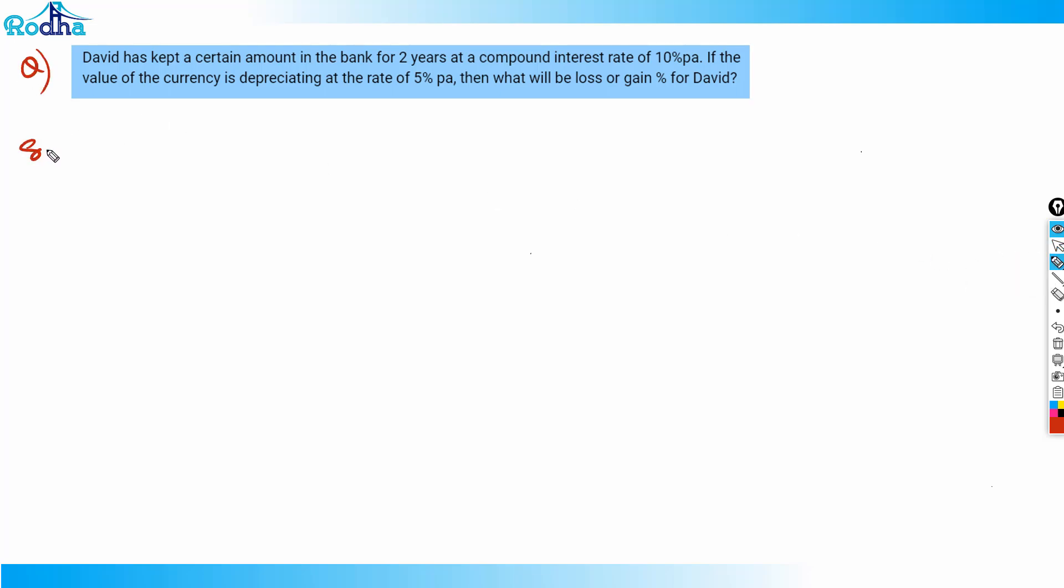Look at this question - you should know this concept and be good at these calculations. David has kept a certain amount in a bank for two years at a compound interest rate of 10% per annum. If the value of the currency is depreciating at the rate of 5% per annum, then what will be the loss or gain percentage for David?